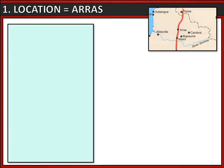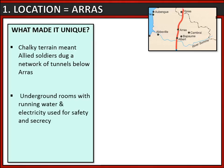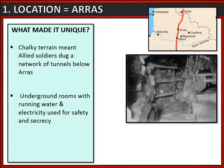We're now going to look at Arras. Now Arras is unusual, very different from the rest of the Western Front. It had chalky terrain, not muddy, and that meant that the allied soldiers could dig a lot more. In fact, they dug a network of tunnels below Arras. That meant they could build underground rooms with running water, electricity, and all of this was used to keep their soldiers safe and also to hide what they were doing from the Germans. In fact, they even built an underground hospital in Arras and fitted it with 700 beds, and this was all in preparation for a huge battle.